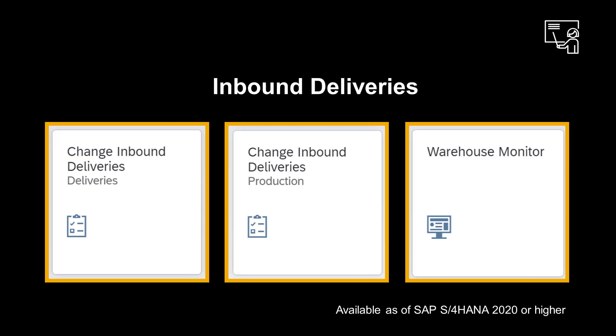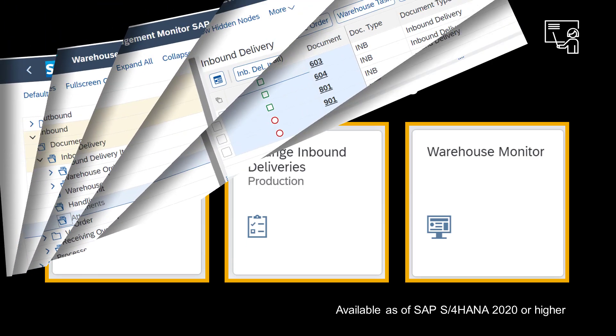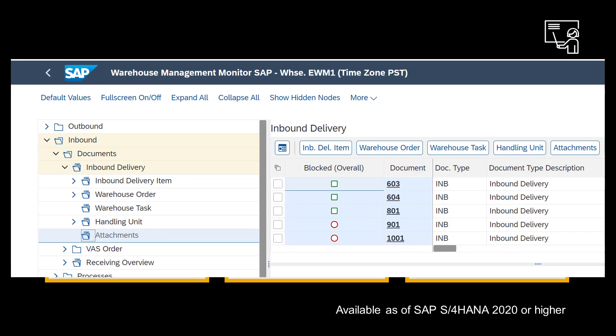Attachment service is available for a number of EWM objects. For inbound deliveries, you can upload, read, update, or delete attachments through the Change Inbound Deliveries app, with the corresponding app for production in the Warehouse Monitor under Inbound, Documents, Inbound Delivery.